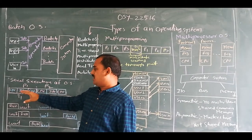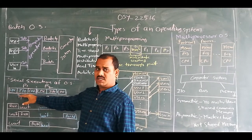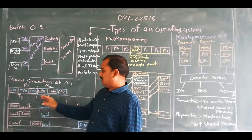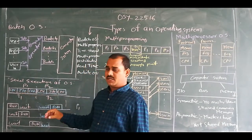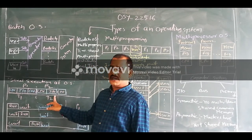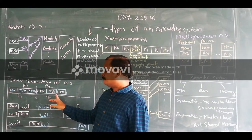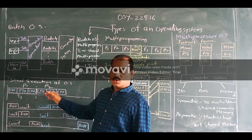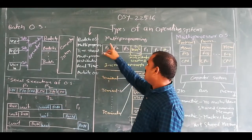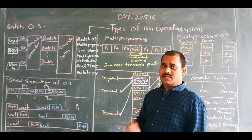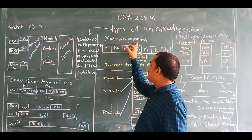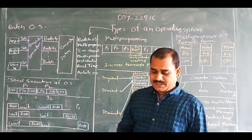Whenever the previous or current task is accomplished, the CPU will not switch to the next process. Due to this feature, the P2 process will be waiting unnecessarily. So to overcome this, the multi-programming operating system — where the name itself suggests that multi means many programs can be executed at a time.